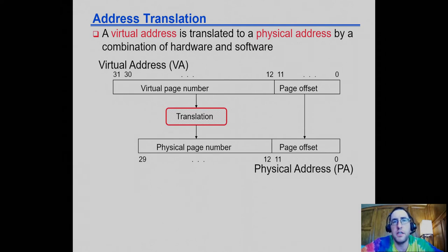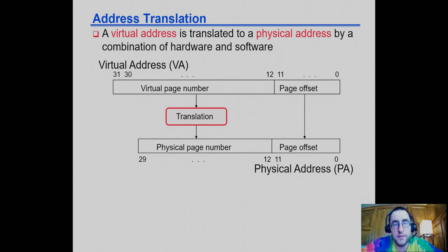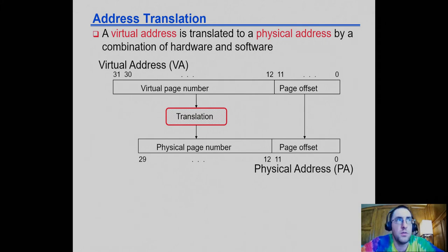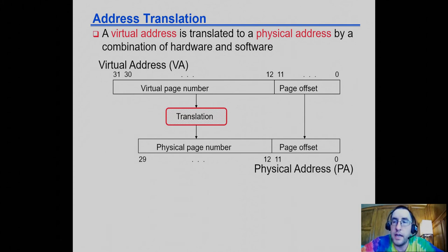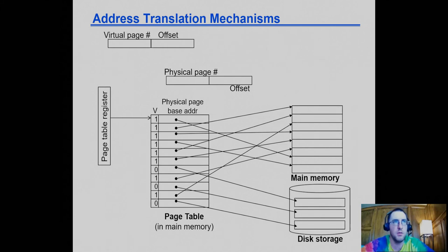The translation of a virtual page number to a physical page number may change the size of the address, depending on the relationship between virtual and physical address space sizes. In this example we have a 30-bit physical address — that's a 1 gigabyte physical address space — and a 32-bit virtual address space, which is 4 gigabytes. So this is what you'd see on a 32-bit machine with 1 gigabyte of RAM.